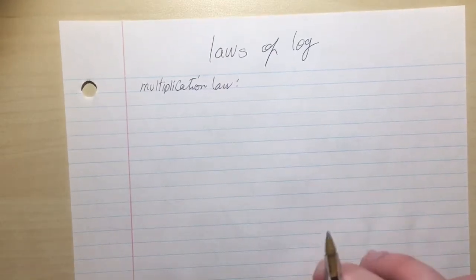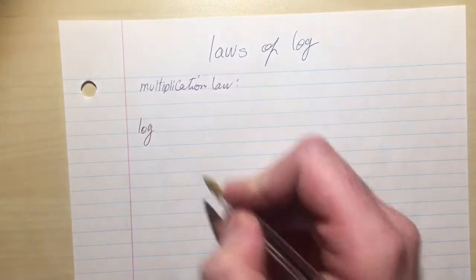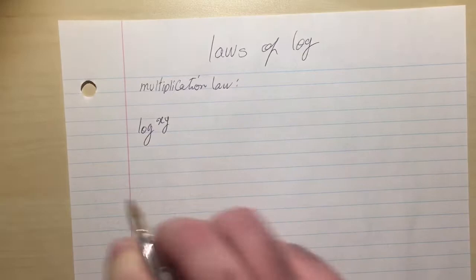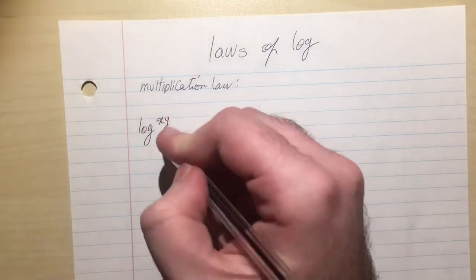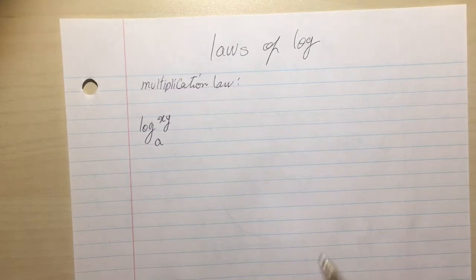Okay, so the general form of writing it is log x, y, two things that are multiplied, base A, which A is a natural number.